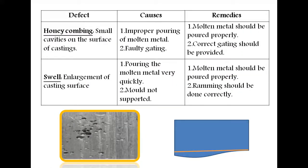Honeycomb refers to small cavities on the surface — entirely different from blow holes, which are a bit bigger. Honeycomb forms small pit-like cavities on the surface due to improper pouring of molten metal. It depends on the component shape, size, and design — sometimes a single gate, sometimes two or three gates are needed. You have to design the gating properly; correct gating should be provided to avoid this type of damage.